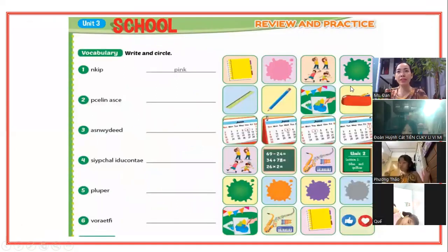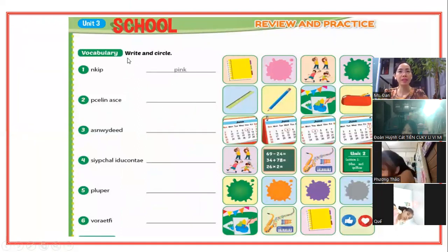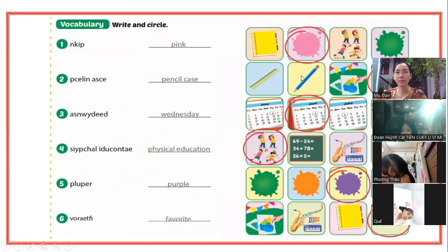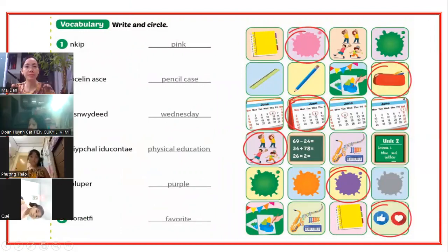Vậy chúng ta qua bài tiếp theo. Review and practice. Hãy viết và khoanh tròn. Ở đây người ta cho cái từ sắp xếp lộn xộn rồi, các bạn nhìn vô, viết ra cái từ này và chọn khoanh tròn vô. Pink là màu hồng, các bạn khoanh tròn màu hồng. Practice - bút chì. Wednesday - thứ tư, các bạn chọn thứ tư.